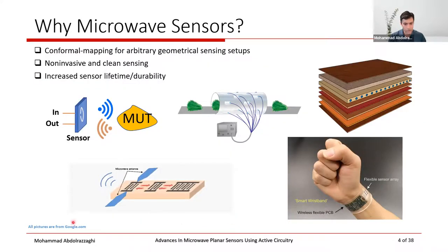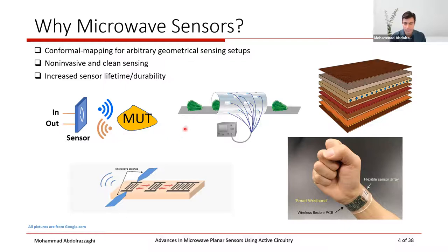Why microwave sensors? They are metallic objects that radiate and receive electromagnetic power into free space. Because of electromagnetic wave propagation, they interact with and interrogate material under test around them, making them suitable for non-contact sensing. Non-invasive sensing enables applications such as food quality monitoring, wearable sensors for health signals, and analysis of deep layers of multi-layered structures.